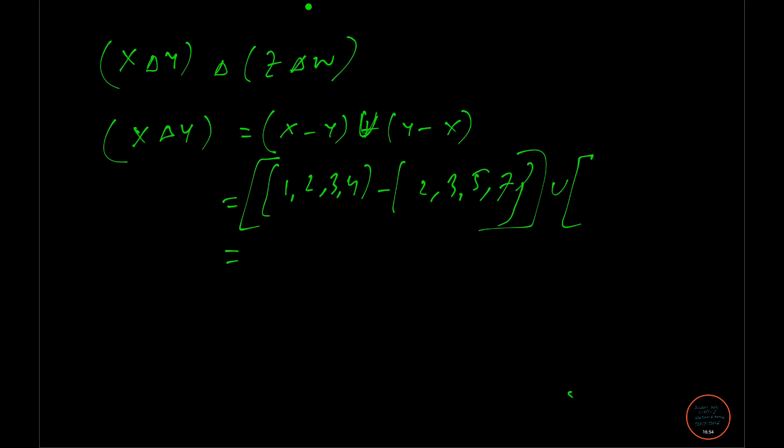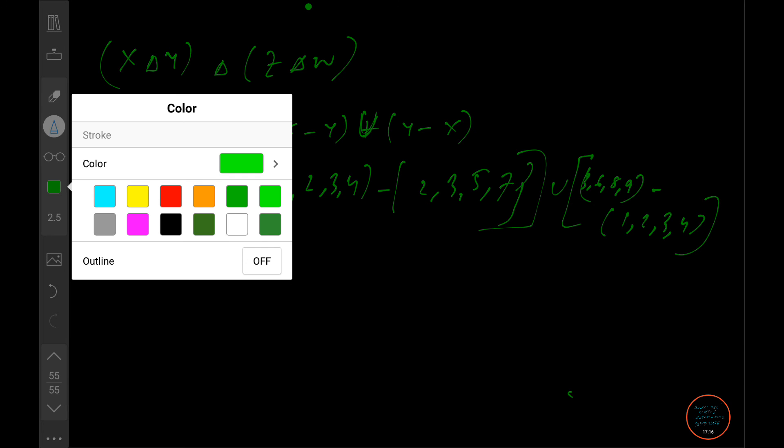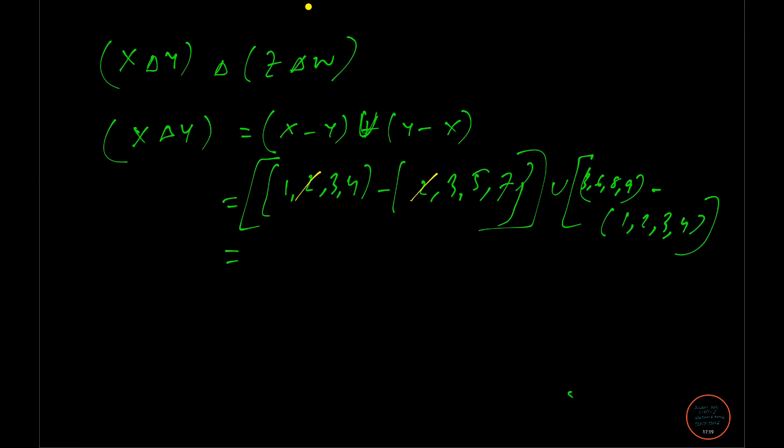So Y is 3, 5, 7 and minus X. So if we just take the portions away, so that is 2. And here in Y minus X, no I have written the Y value wrong. This should be 3, 5, 7.